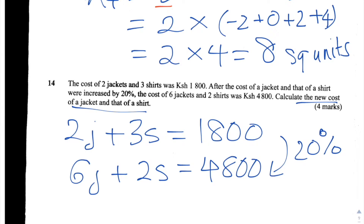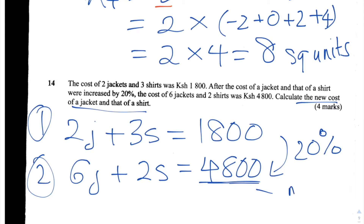So how I would attempt to answer this question is: we have two equations, and what I would do is first turn the 4,800 — which is the new cost after the increase — back into the old cost by dividing by 1.2. Then I would treat equations one and two as simultaneous equations, which gives me the old price of both a jacket and a shirt. I would then multiply by 1.2 to find the new price.